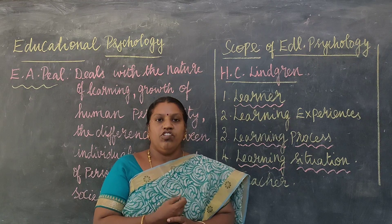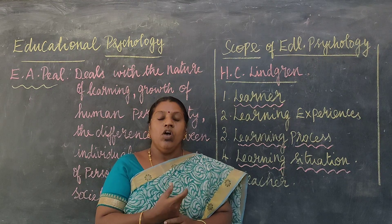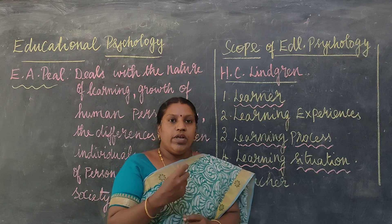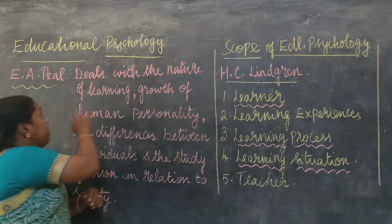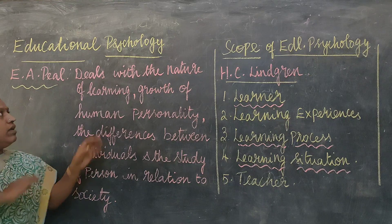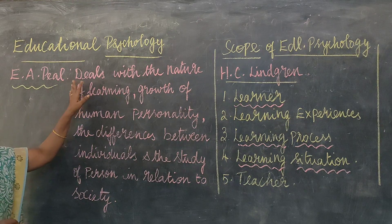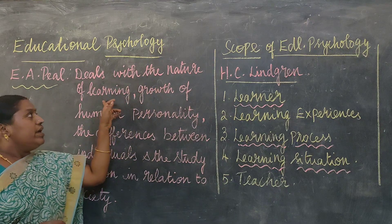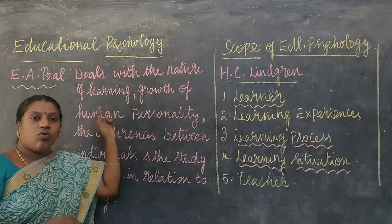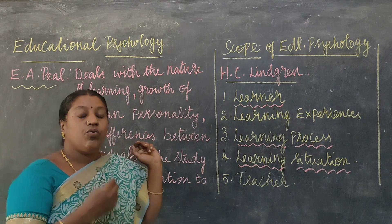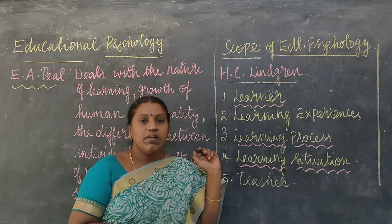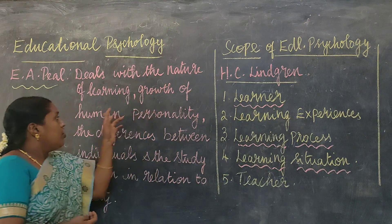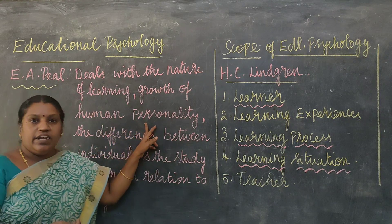Let us see some other definition which will describe more about what is educational psychology. You can see the definition given by EAP. He says that educational psychology deals with the nature of learning — how do we learn, how do we memorize things. That is learning. Then, there is the growth of the human personality.